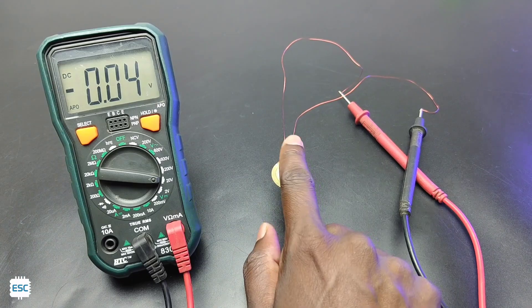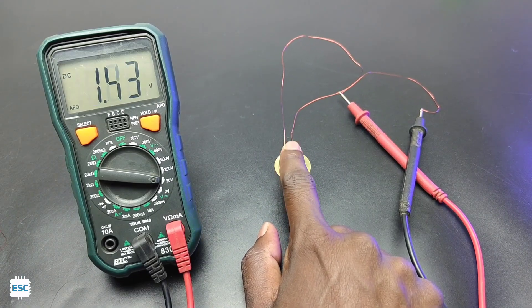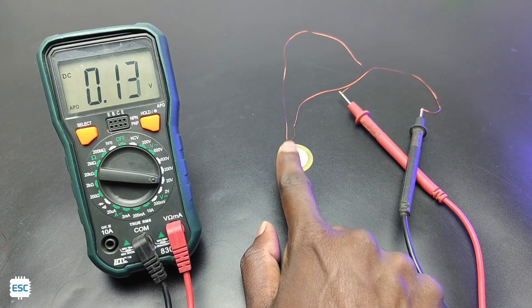In this step, I have connected the disc to a multimeter and you can see the output. It varies and changes the directions according to the vibration.